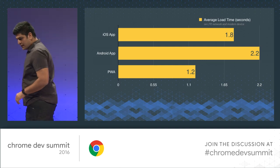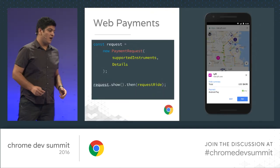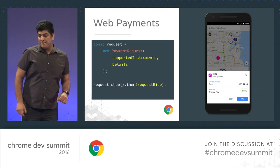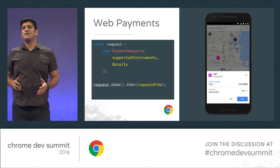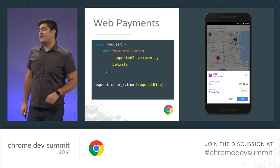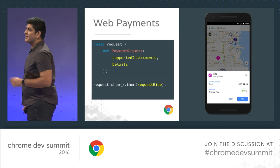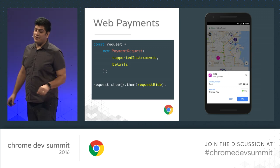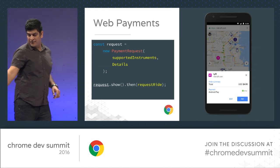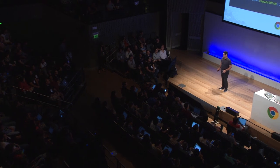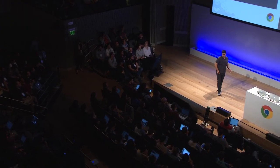With slower networks and slower devices, we still get acceptable results. Now that she's in our PWA, she needs to sign up. For sign up in Lyft, we ask for your phone number and a payment method. If you have web payment set up, you can just use Android Pay with the Web Payment API — no need to enter your credit card. With just two taps, she has an account and can pay for her ride.